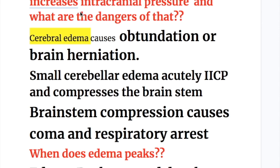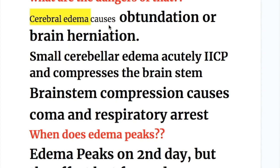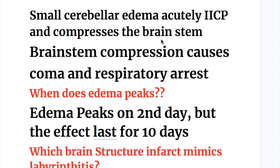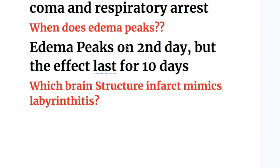Cerebral edema increases intracranial pressure. Cerebral edema can cause obtundation or brain herniation. Small cerebellar edema can acutely increase intracranial pressure, compressing the brain stem and causing coma and respiratory arrest. Edema peaks on the second day, but its effects last for 10 days.